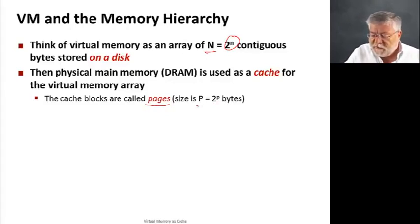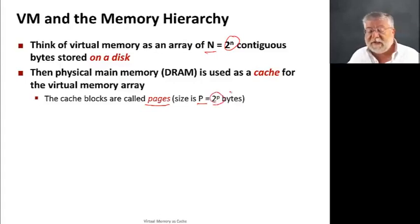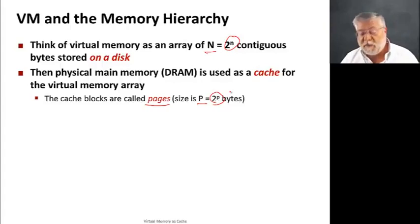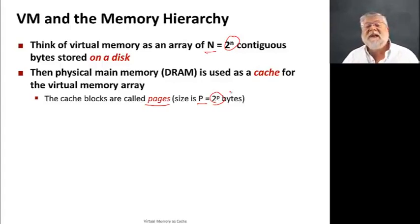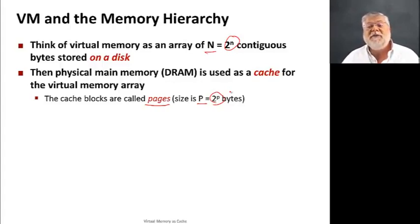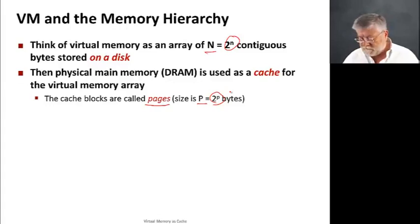A page is going to be of a certain size, capital P, or 2 to the little p bytes — the log of big P. And typically the size of these pages is on the order of kilobytes, rather than on the order of just a few dozen bytes like we've seen before.